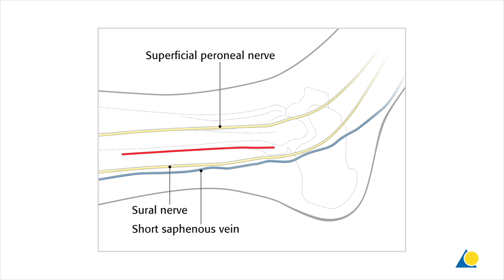In more anterior incisions, the superficial peroneal nerve should be identified and protected. When dissecting posteriorly, care is taken not to damage the short saphenous vein and the sural nerve.